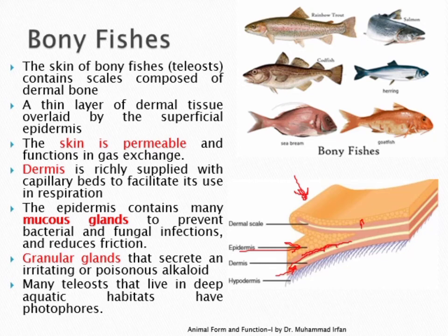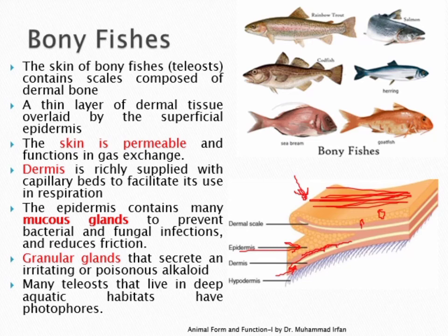Fish that live in deep aquatic environments may also have modified epithelial cells called photophores, which radiate light, allowing them to shine in the deep environment. The difference between cartilaginous fishes and bony fishes is that in cartilaginous fishes, the dermal scales (teeth-like placoid scales) penetrate the epidermis, while in bony fishes, the scales remain within the dermis and do not penetrate the epidermis.